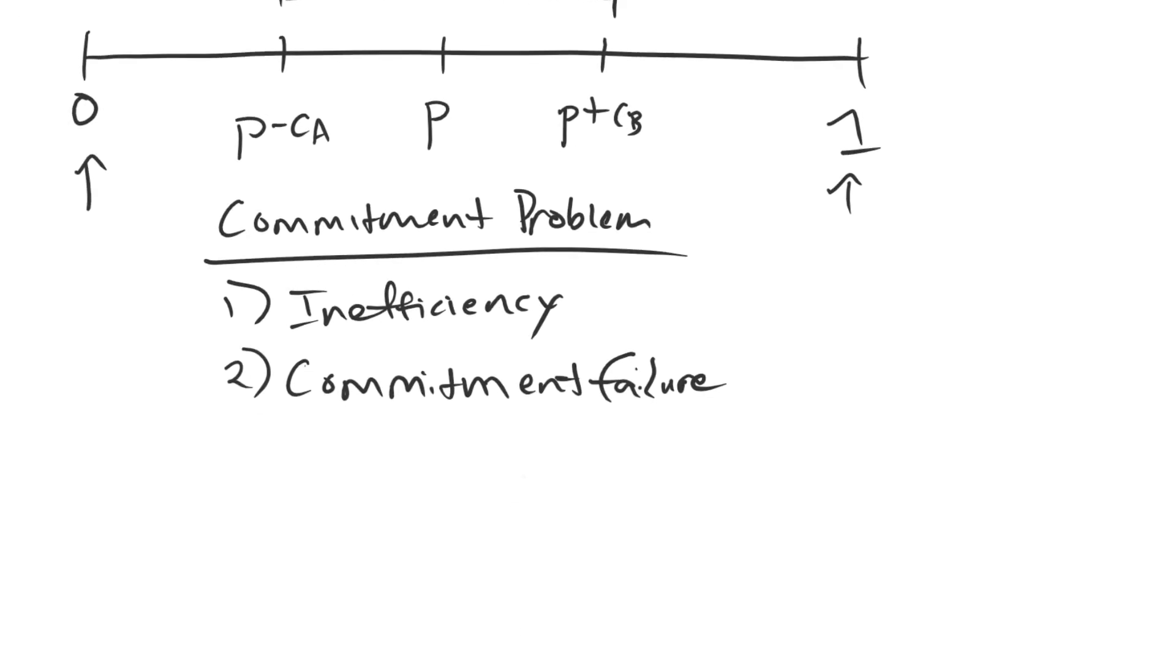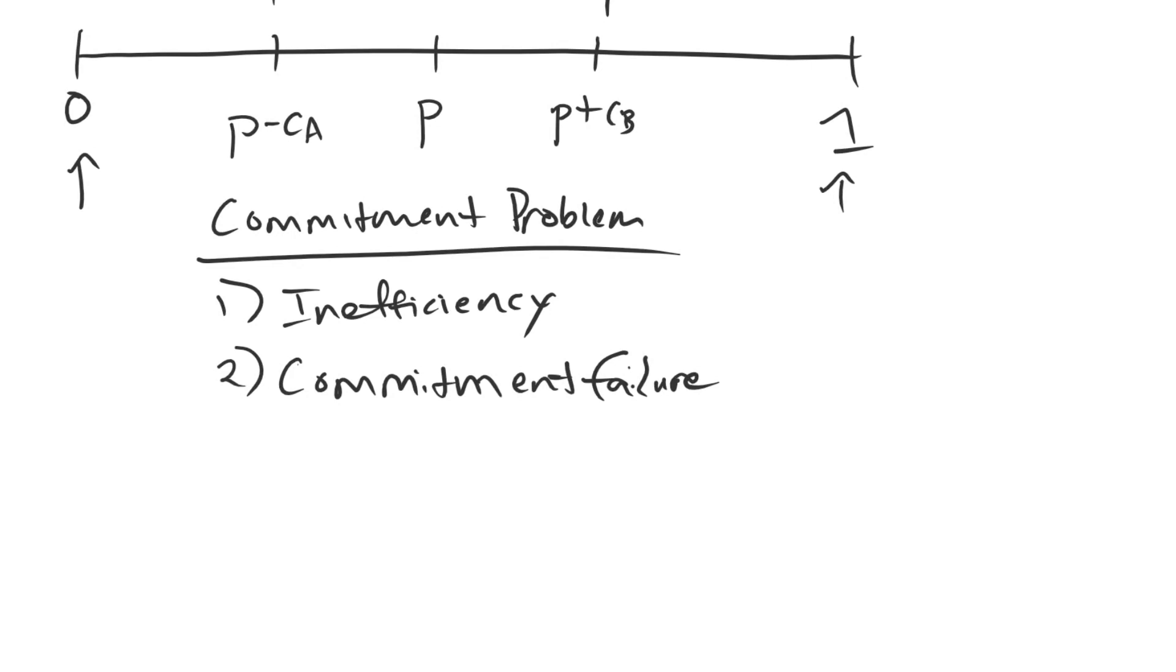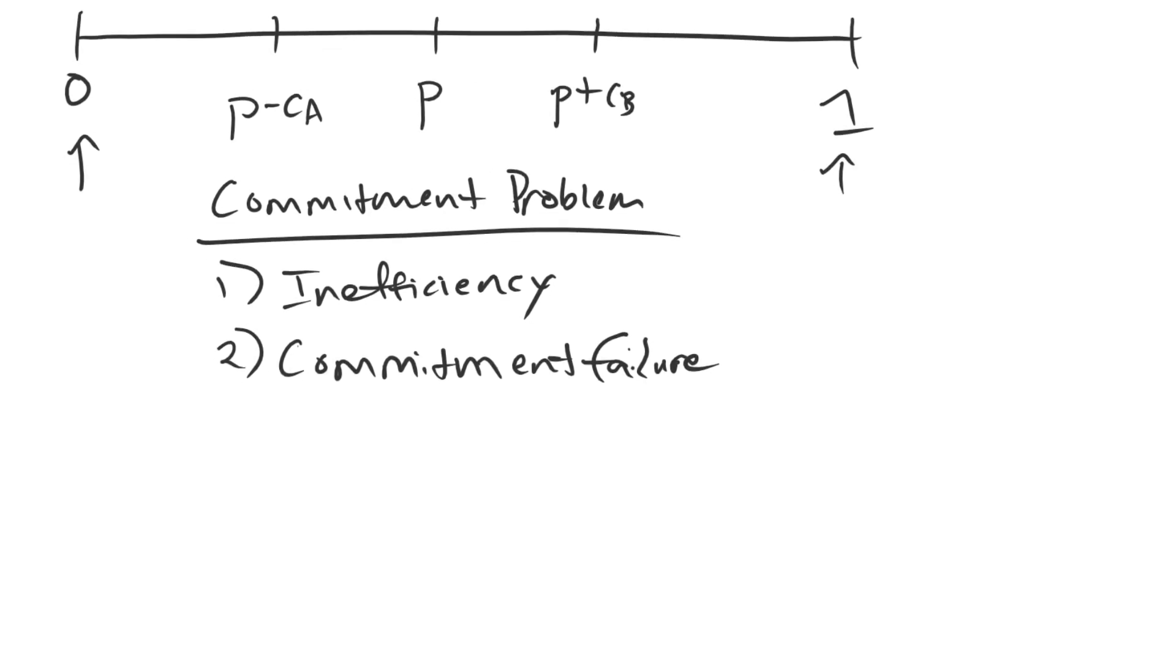So for inefficiency, let's think about what the outcome of this game is. If we're having a war being fought as a consequence of the indivisible good, then both of our payoffs are going to be our war payoffs. So A's utility is its war payoff, which is P minus CA. That's what it's actually going to get when it plays. And B's payoff is its war payoff, which is 1 minus P minus CB. So these are the utilities that the parties are receiving when they actually play the game.